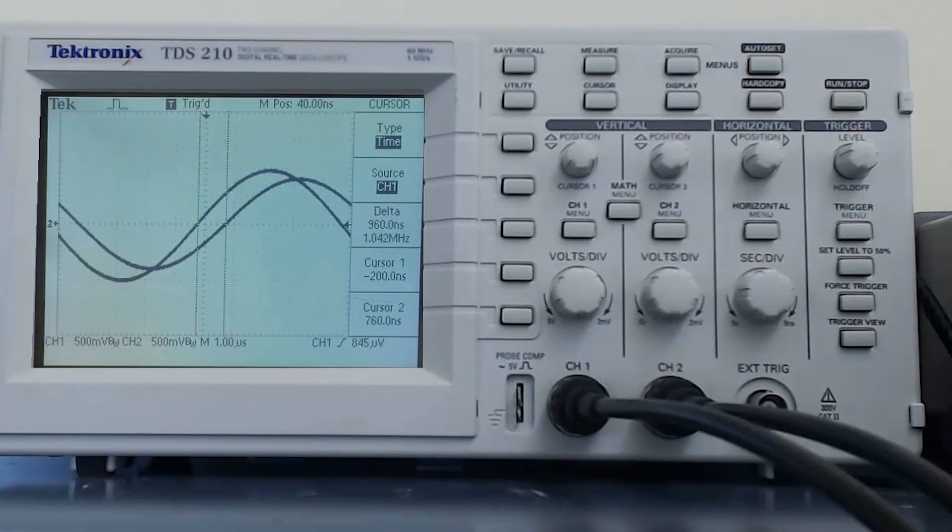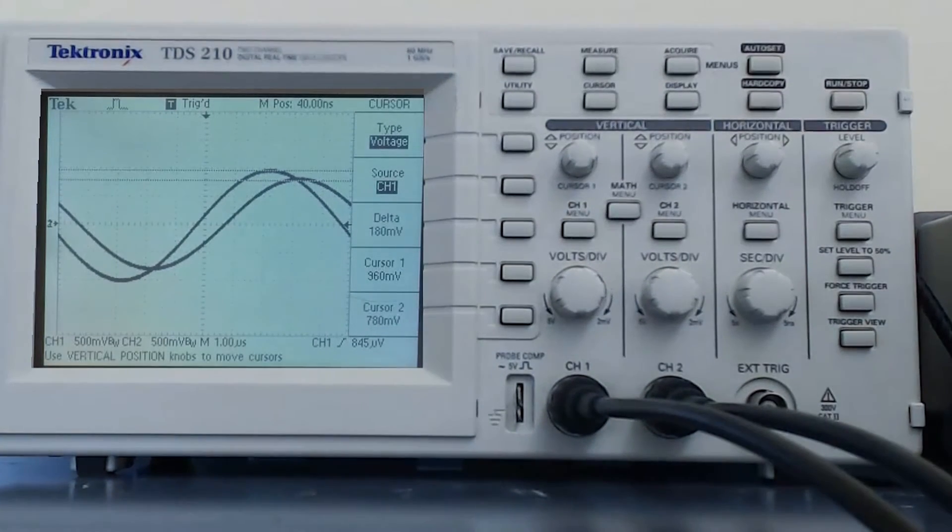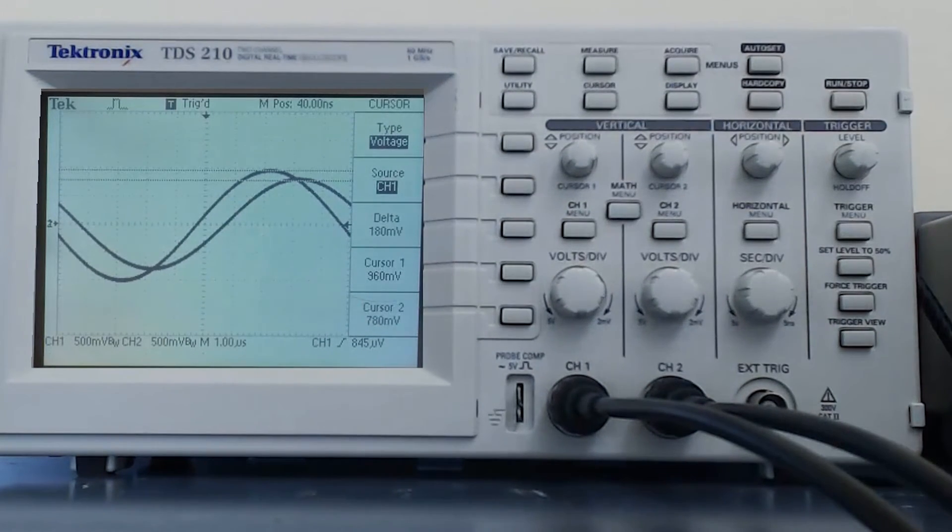I could also switch the cursors to voltage cursors. This might allow me to see how much of a voltage change there is between two waveforms in very precise terms.